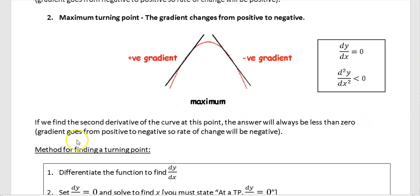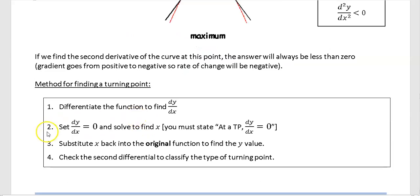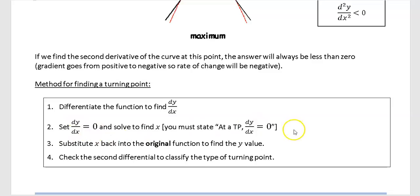The method for finding a turning point or stationary point: first, differentiate the function to find dy/dx. Then set dy/dx equal to zero and solve to find x. Then substitute back into the original function to find the corresponding y value. Finally, check with the second derivative to determine what type of turning point it is — maximum or minimum.